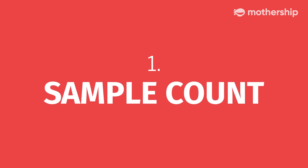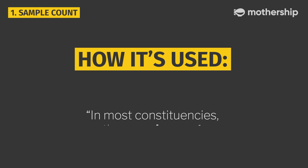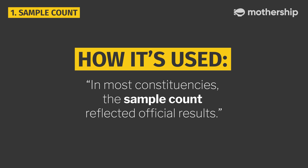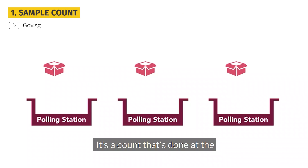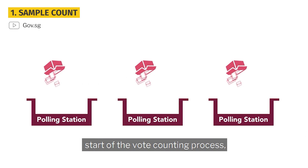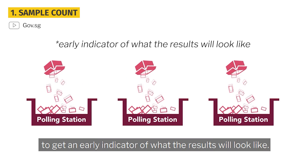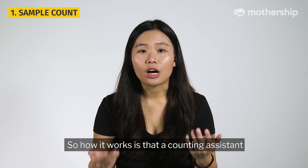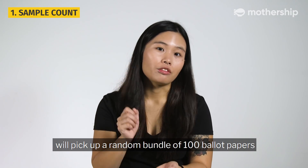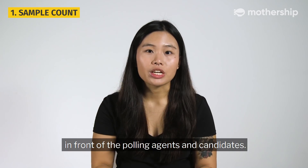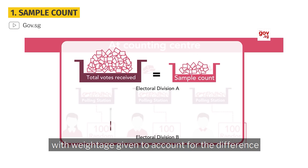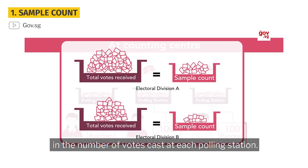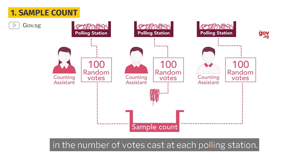Number 1: Sample count. How it's used: In most constituencies, the sample count reflected official results. This term is commonly used after voting has ended. It's a count done at the start of the vote counting process to get an early indicator of what the results will look like. An accounting assistant will pick up a random bundle of 100 ballot papers in front of the voting agents and candidates, and the votes will be added up with weightage given to account for the difference in the number of votes cast at each polling station.